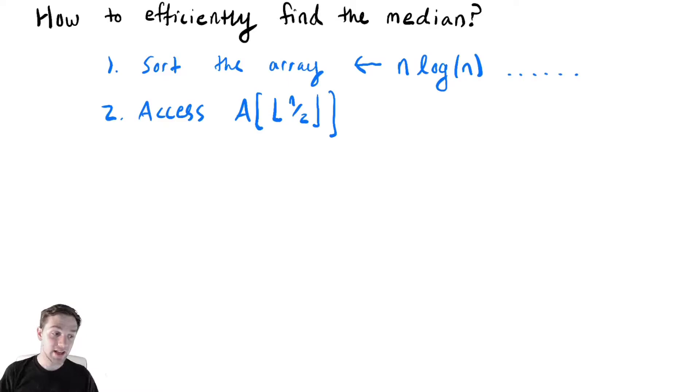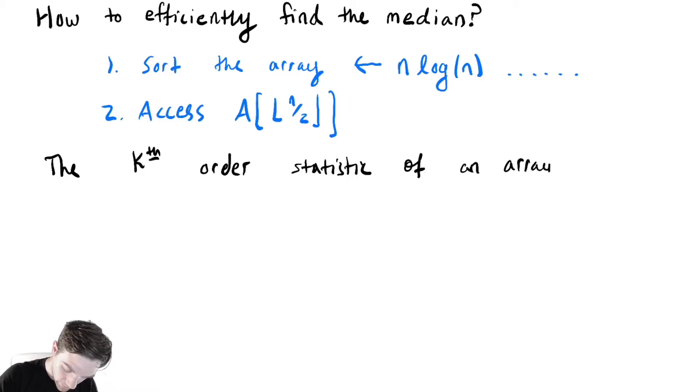Here instead we're actually going to solve a harder problem that will turn out to make this conceptually easier. So we're going to introduce the idea of an order statistic. The kth order statistic of an array is the kth smallest element.